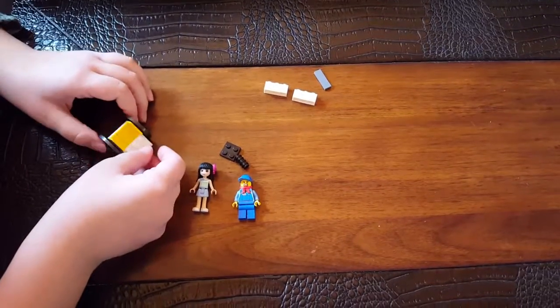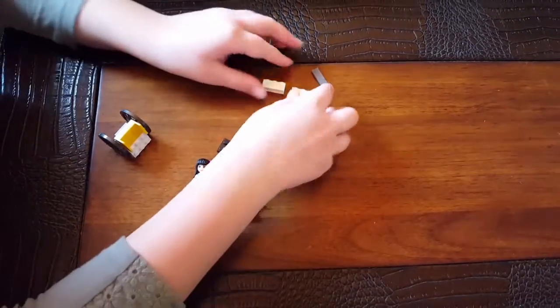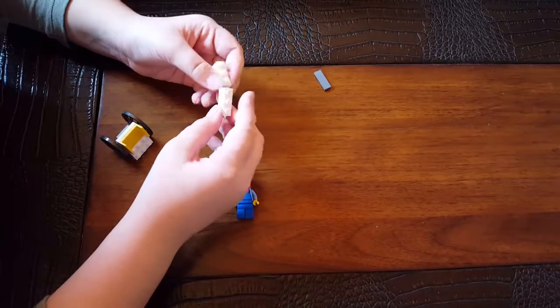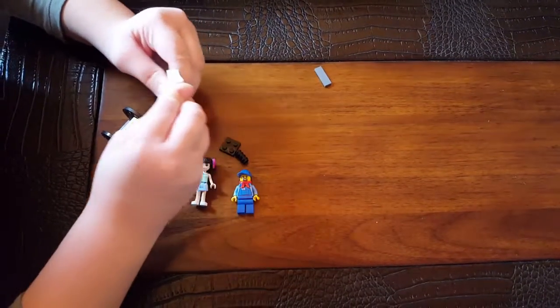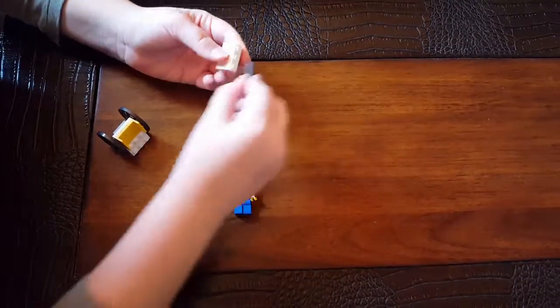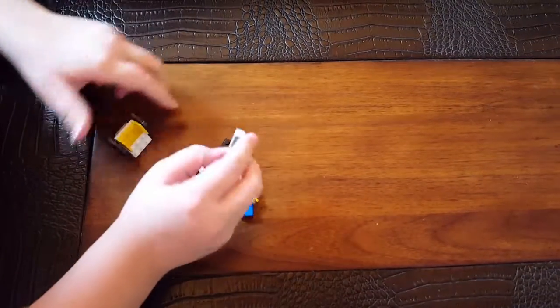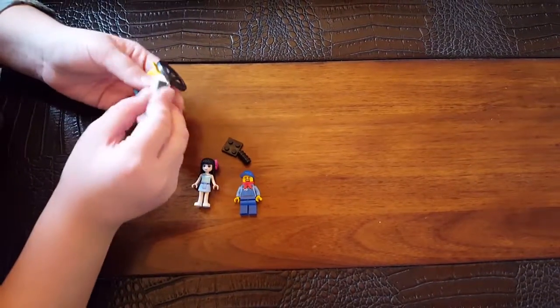And now, I am going to show you how to make the back of the wheelchair. So first, you are going to take your 1x3 bricks and stack them. Then you are going to take your tile and stack it, and you are going to put it there.